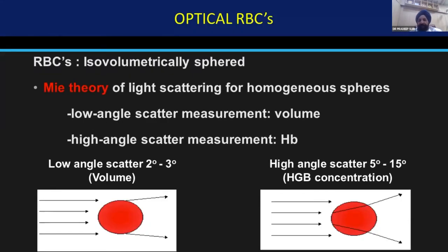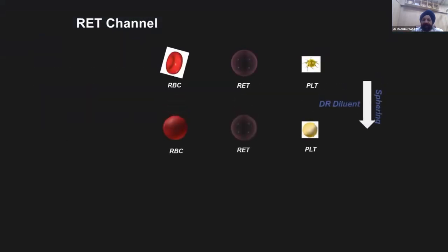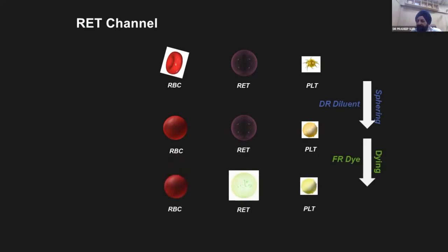Optical RBCs are based on the Mie theory of light scatter of homogeneous spheres. In this theory, if these spheres are isovolumetrically spherized, then the low-angle scatter measures the volume — in our case, the MCV or mean corpuscular volume. The high-angle scatter measures the hemoglobin concentration, or the MCHC. In modern analyzers, we use diluents which spherize the RBCs, and then supravital dyes — as Prashant was describing — to measure reticulocyte parameters like RET-He, IRF, LFR, MFR, HFR, etc.